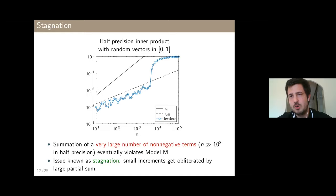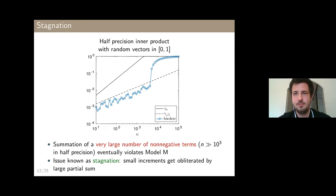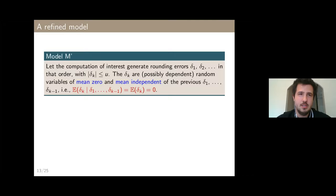This experiment illustrates that Model N is not very realistic — it can be broken easily. In particular, the independence assumption in Model N is simply wrong: rounding errors are not independent. In a sequence of operations, the rounding errors towards the end depend on the previous rounding errors, because those affect the actual result.